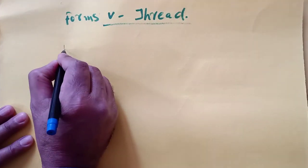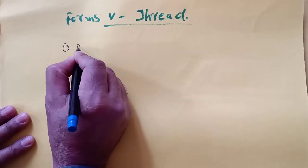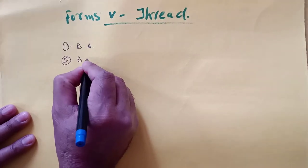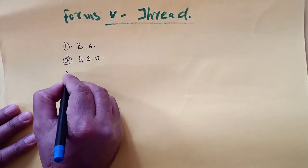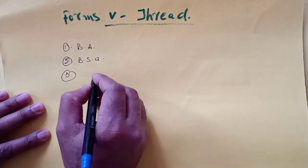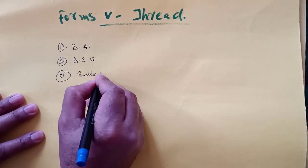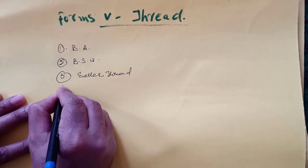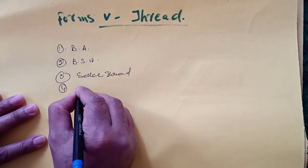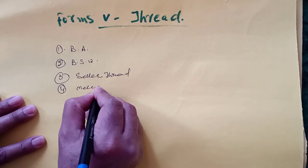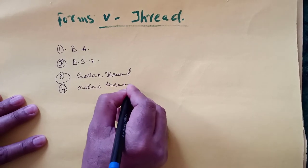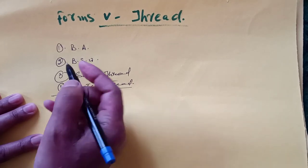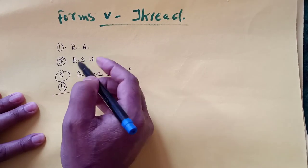Number one is BA thread, number two is BSW, number three is Seller thread, number four is Metric thread. As per your syllabus, these four threads are in your syllabus. The main difference between these threads is simply the difference of angle.